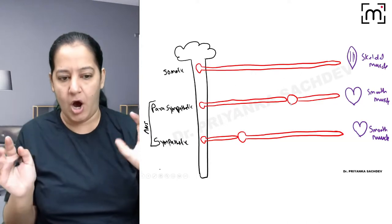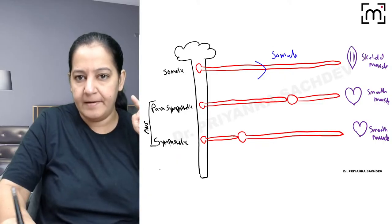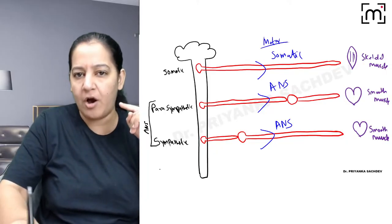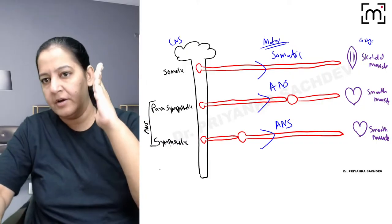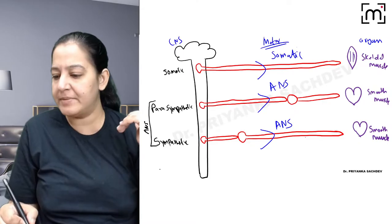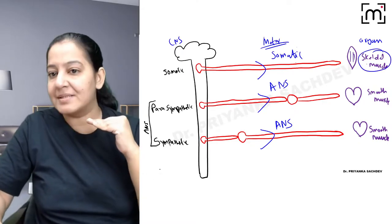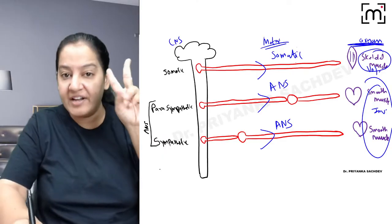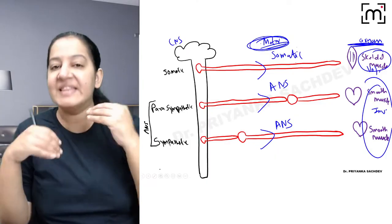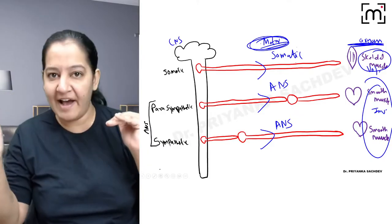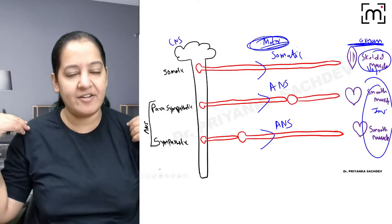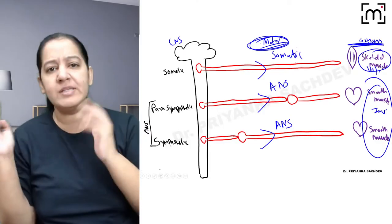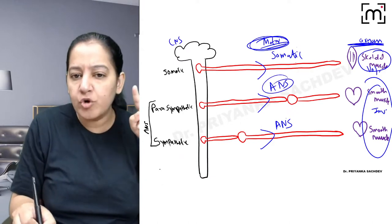To summarize what we have learned: the nervous system divides into CNS and PNS. PNS contains sensory and motor nerves. Motor nerves divide into somatic — supplying voluntary skeletal muscles — and autonomic — supplying involuntary smooth muscles. In somatic there is only one neuron. In autonomic there are two neurons with a ganglion junction. If ganglion is near the organ, pre-ganglionic is longer — that is parasympathetic. If ganglion is near CNS, post-ganglionic is longer — that is sympathetic.